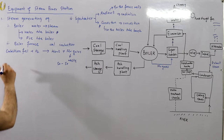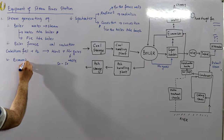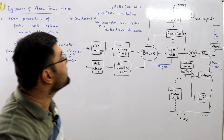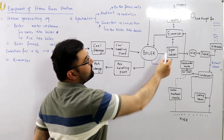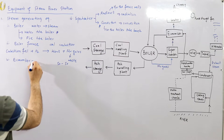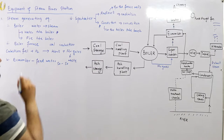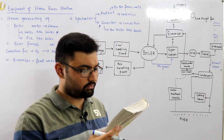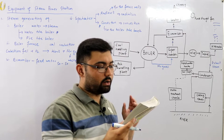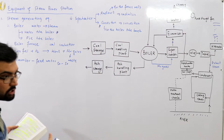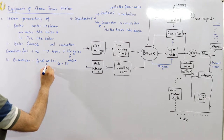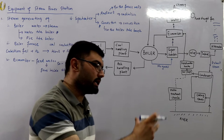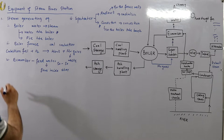Number four is the economizer. The economizer is a device which heats the feed water on its way to the boiler by deriving heat from the flue gases. This increases boiler efficiency. The feed water flows inside the tubes and the flue gases flow over them, extracting heat from the escaping gases.